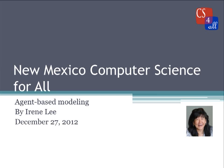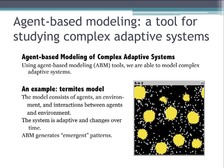This is an introductory talk on agent-based modeling. Agent-based modeling is a tool for studying complex adaptive systems. With these tools, we're able to model systems by describing the agents and the environment, as well as the interactions between agents and environment, and through running the simulation, we can see how the system adapts and changes over time, and whether or not the model produces emergent patterns.